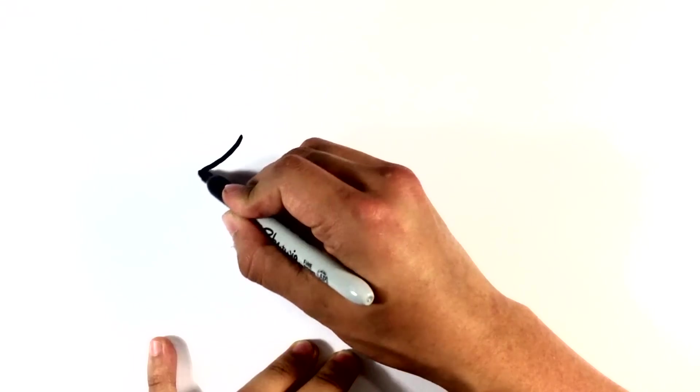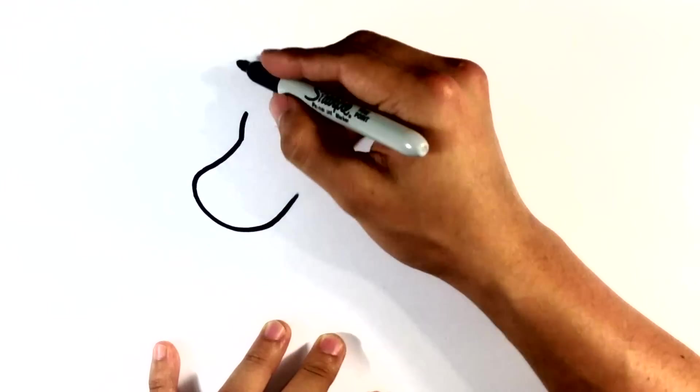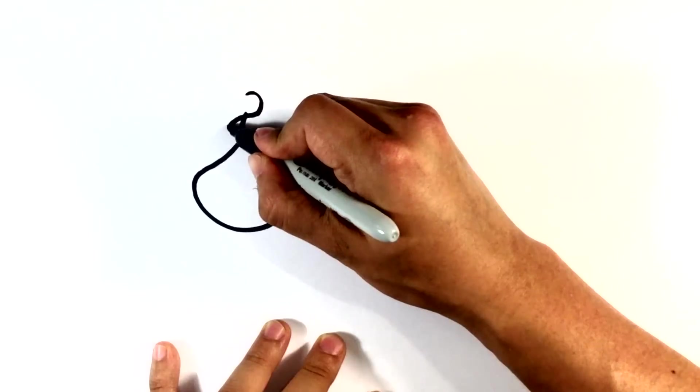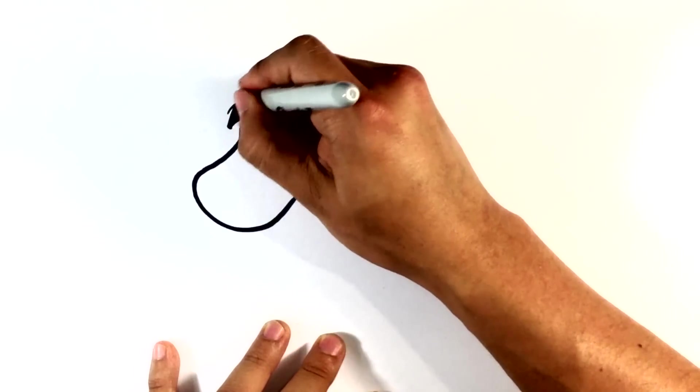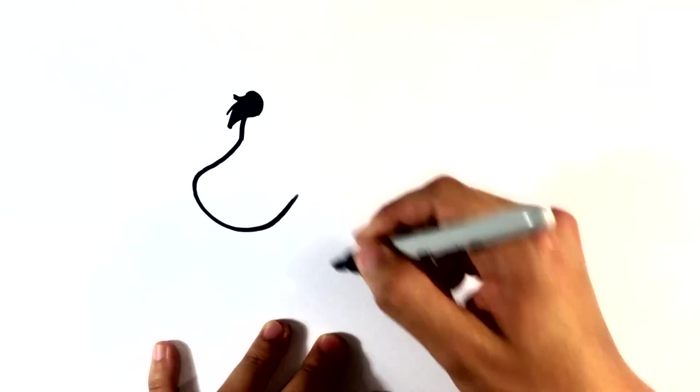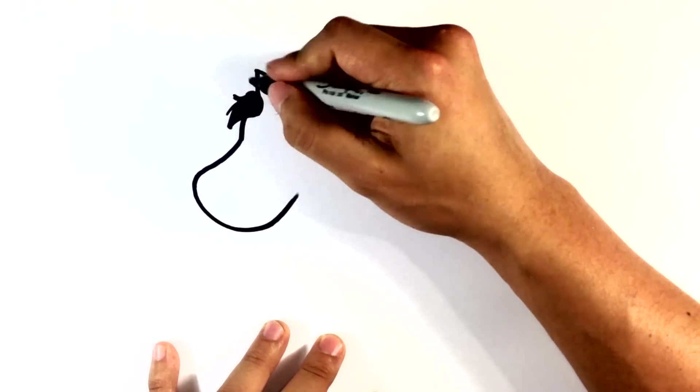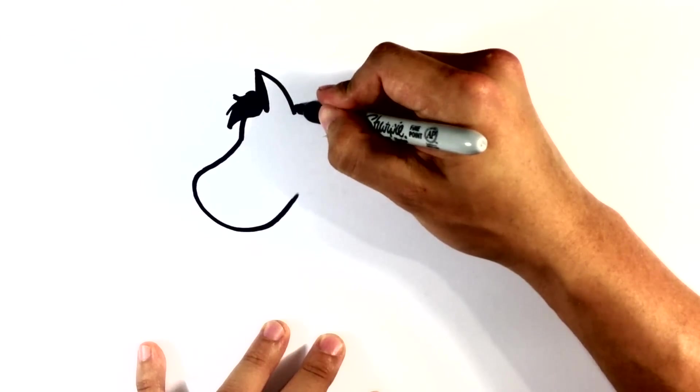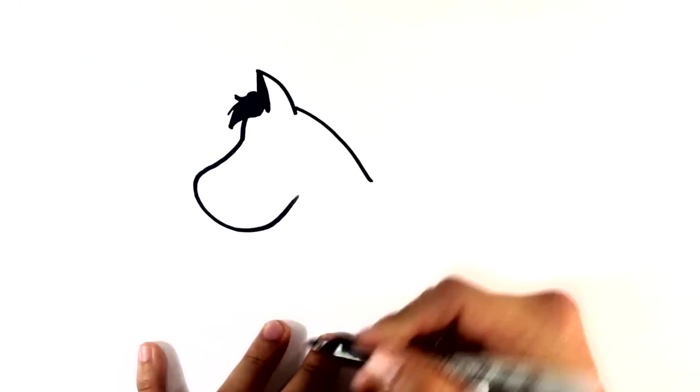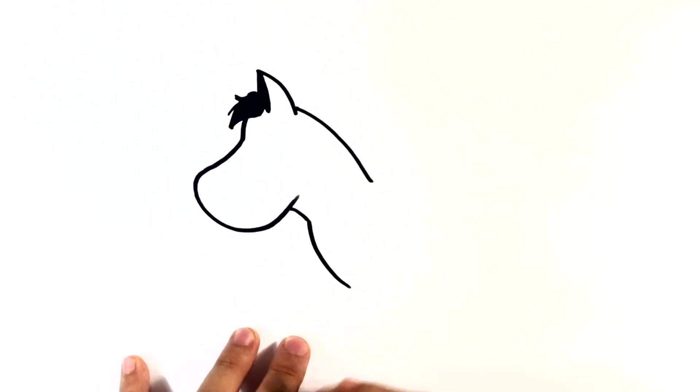Starting with the mouth, the face, some of the hair there for the front, the ear, the neck, front of the chest.